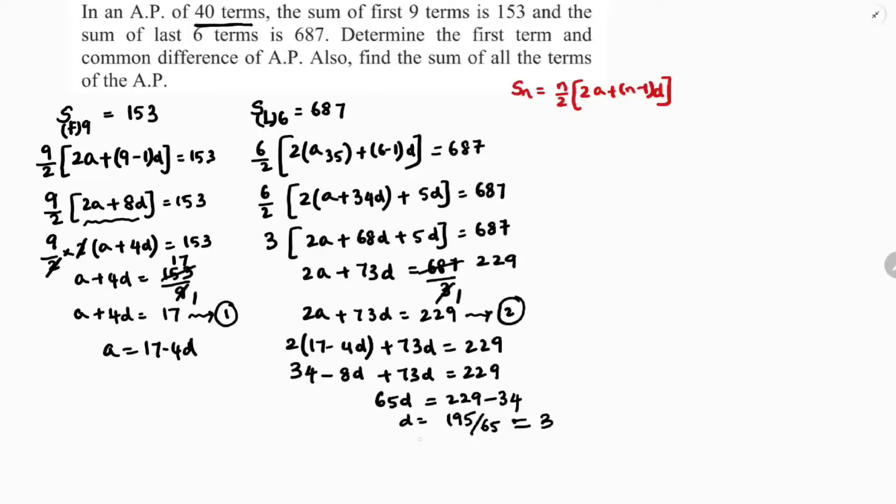If I substitute D is 3, A equals 17 minus 4 times 3, 17 minus 12. The value of A is 5. Now we got A and D.